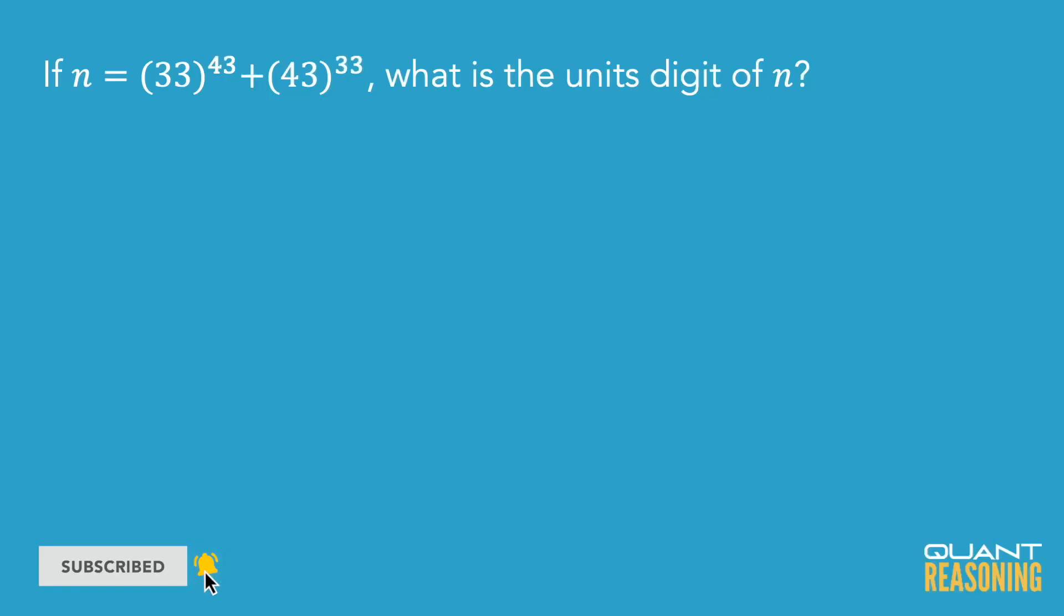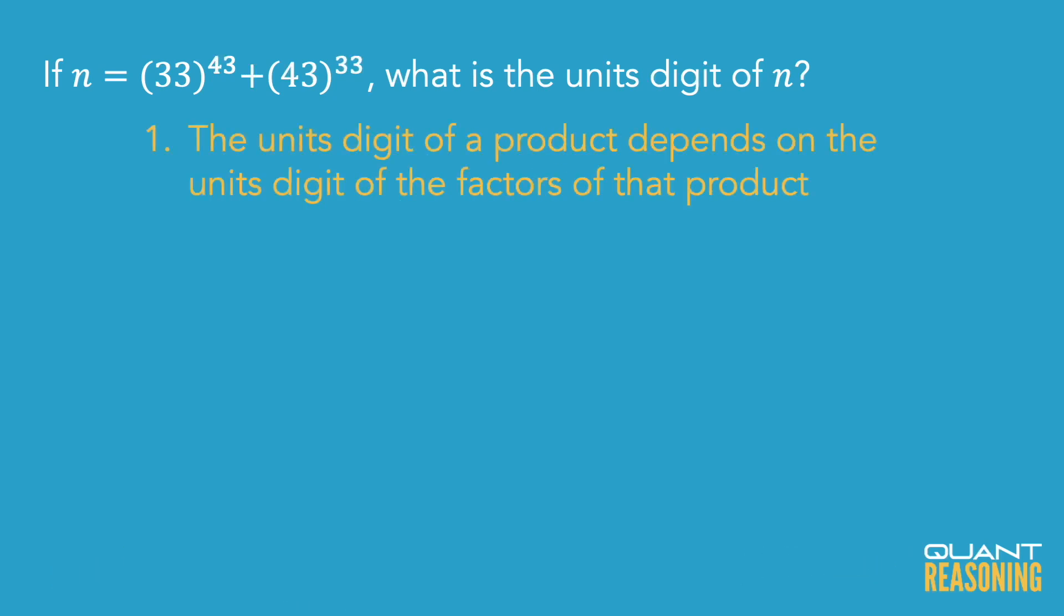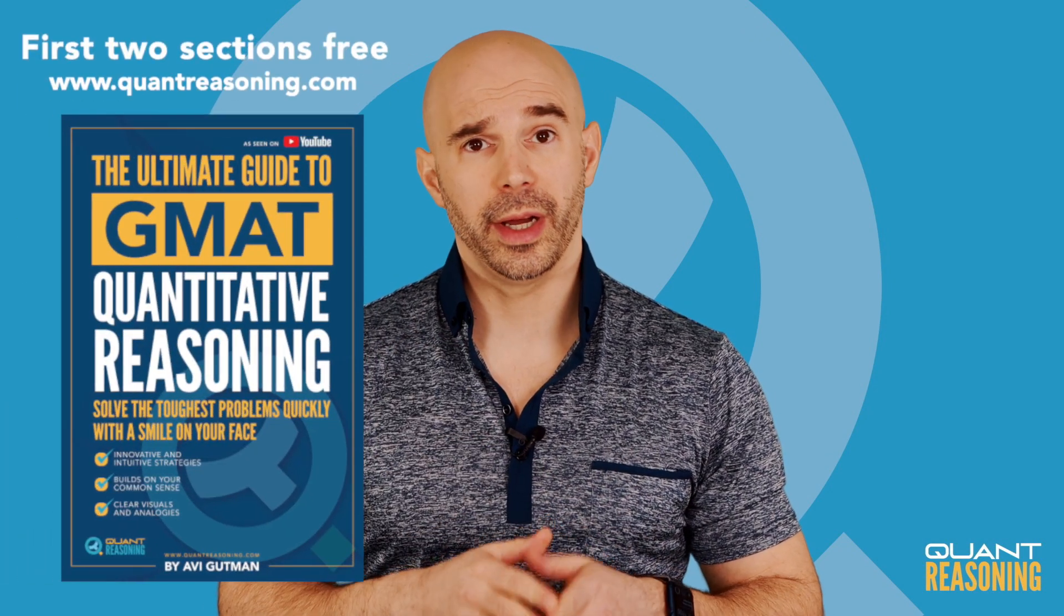In order to actually solve this question, there's just two things that we need to know. Number one, the units digit of a product depends only on the units digits of all of the factors of that product. In other words, we can ignore tens digit, hundreds digit, thousands digit, etc. They don't impact the units digit and I explain in my book why that is.